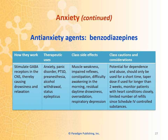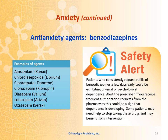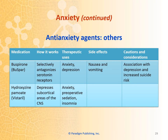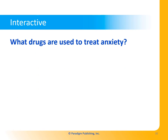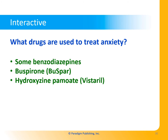Benzodiazepines stimulate GABA receptors in the CNS, thereby causing drowsiness and relaxation. Examples include alprazolam, chlordiazepoxide, clorazepate, clonazepam, diazepam, lorazepam, and oxazepam. Patients who consistently request refills a few days early could be exhibiting physical or psychological dependence. Alert the prescriber if you receive frequent authorization requests from the pharmacy, as this could be a sign that dependence is developing. Some patients may need to stop taking these drugs and may benefit from an intervention. Other anti-anxiety agents include Buspar and Vistaril. Drugs used to treat anxiety include benzodiazepines, buspirone, and hydroxyzine.